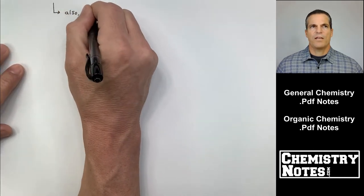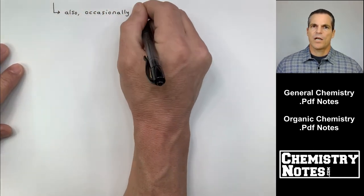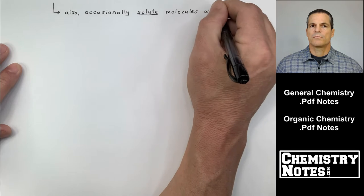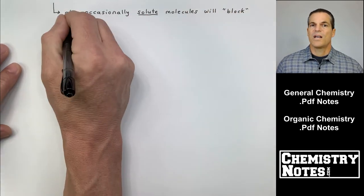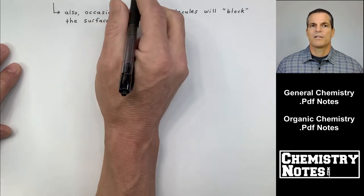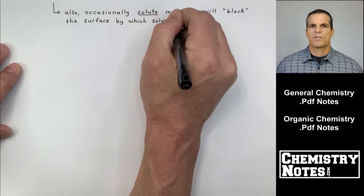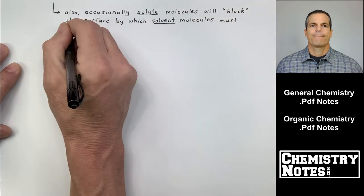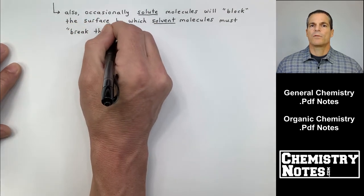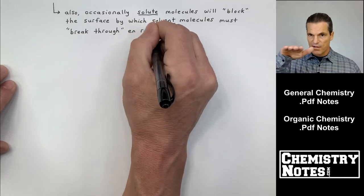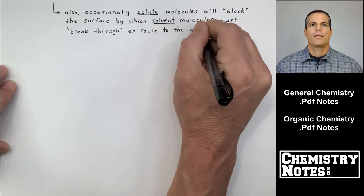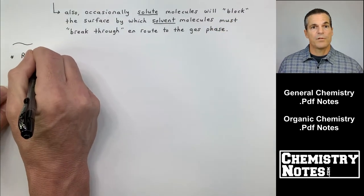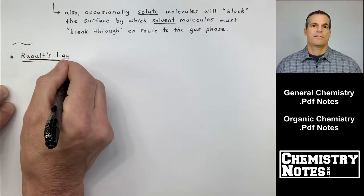There's also another reason that's not a main reason like I just described, but also another reason is that also occasionally solute molecules, or in this case, my solute ions, Na plus or Cl minus, they'll sometimes block the surface by which solvent molecules can escape. So occasionally solute molecules will block the surface, the surface of the solvent. And if that happens, there's not as much surface area as there used to be in the pure solvent in order to allow them to break through and route to the gas phase.